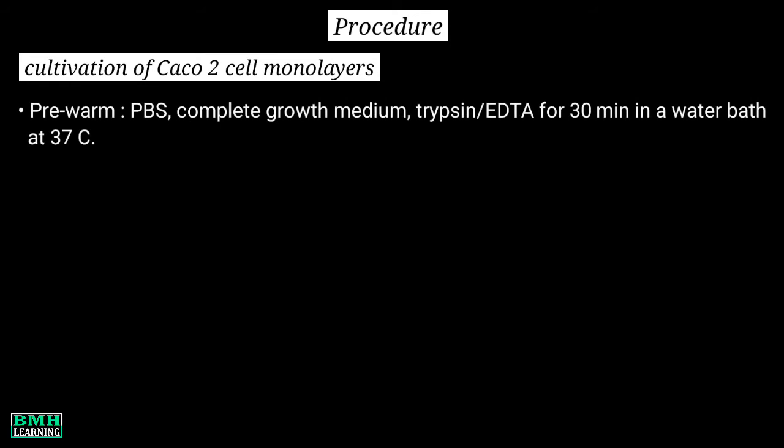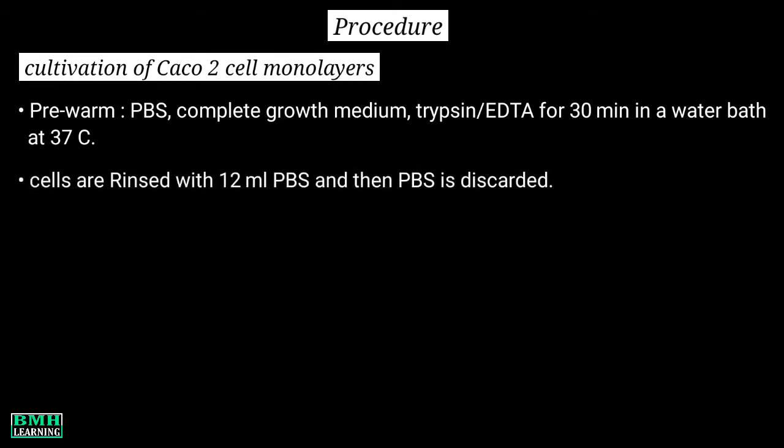Procedure — cultivation of CACO2 cell monolayers: Pre-warm PBS, complete growth medium, and trypsin-EDTA for 30 minutes in a water bath set at 37°C. The cells are rinsed with 12 ml PBS and then the PBS is discarded.